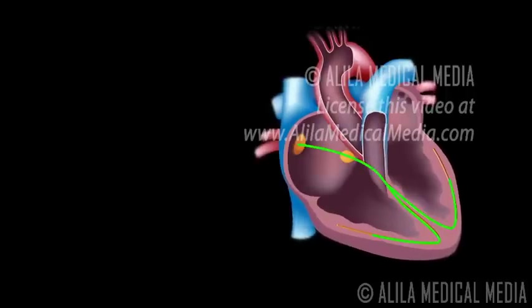The signals are then passed onto fascicular branches and spread through millions of Purkinje fibers over the ventricular myocardium. Heart block is a group of diseases characterized by the presence of an obstruction, or a block, in the heart's electrical pathway. A block may slow down the conduction of electrical impulses or, in more severe cases, completely stop them.